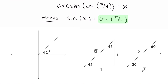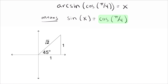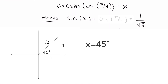Cosine of π/4 is adjacent over hypotenuse, which equals 1/√2. So the problem reduces to sine of x equals 1/√2 — exactly Problem 1 — and the answer is x = 45 degrees. When extra content appears inside the arc function, there's just one additional step of evaluating it first; after that the process is identical.